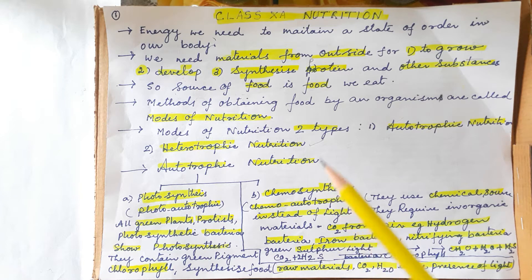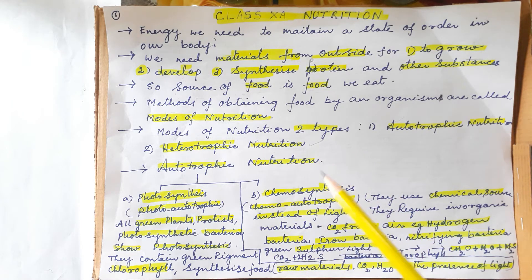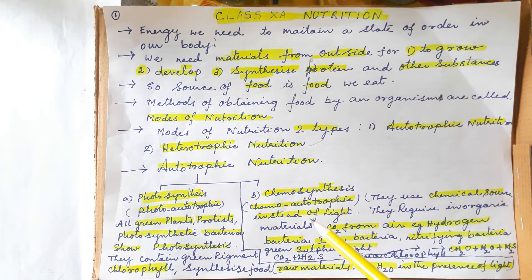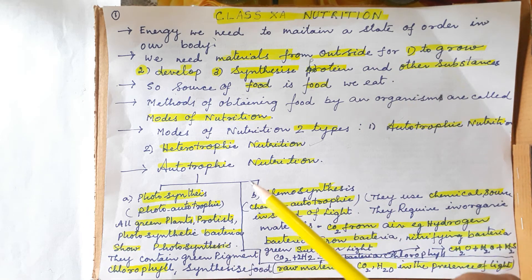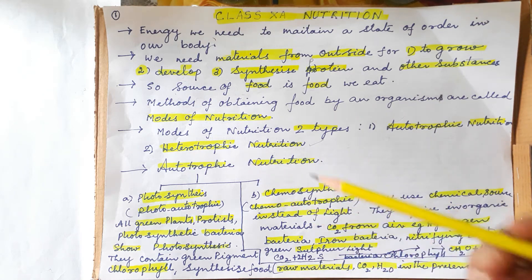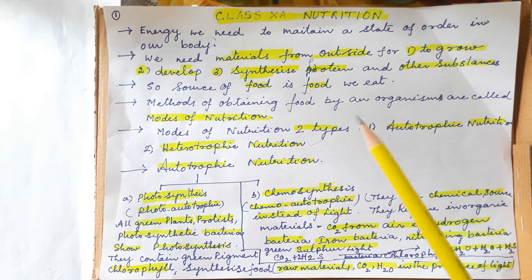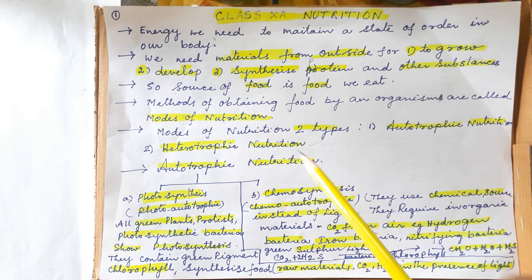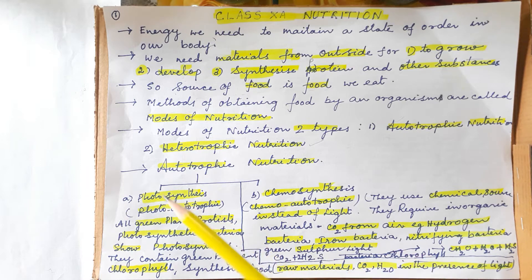Let us discuss some points about autotrophic nutrition today. 'Auto' means self. Autotrophic nutrition refers to any organism which can synthesize its own food — definitely you will remember green plants here. The word 'green' is very important. There are two kinds of autotrophic nutrition.